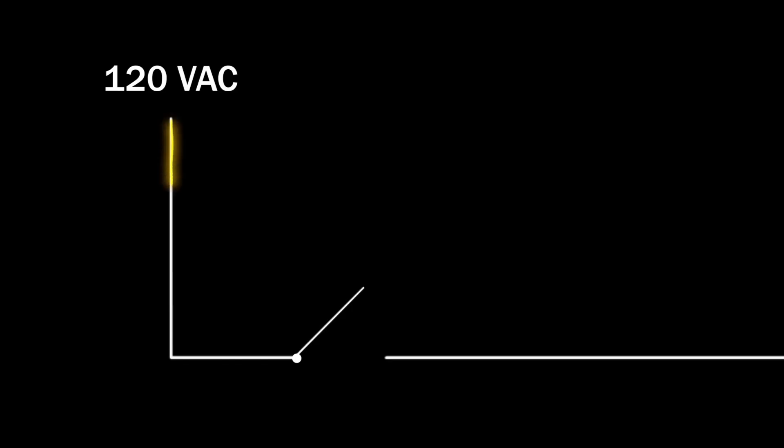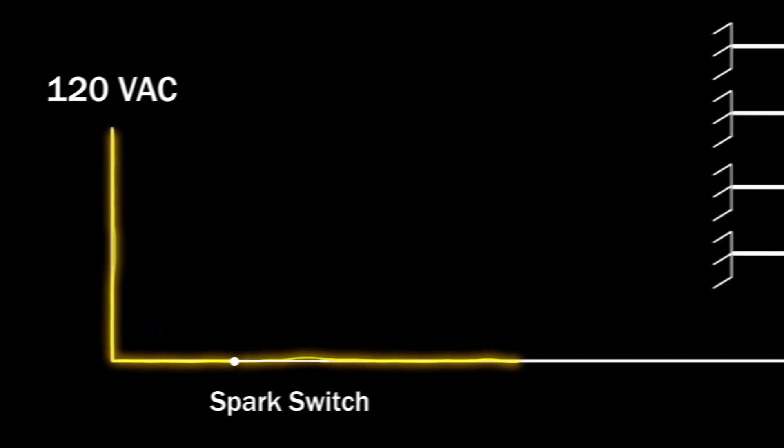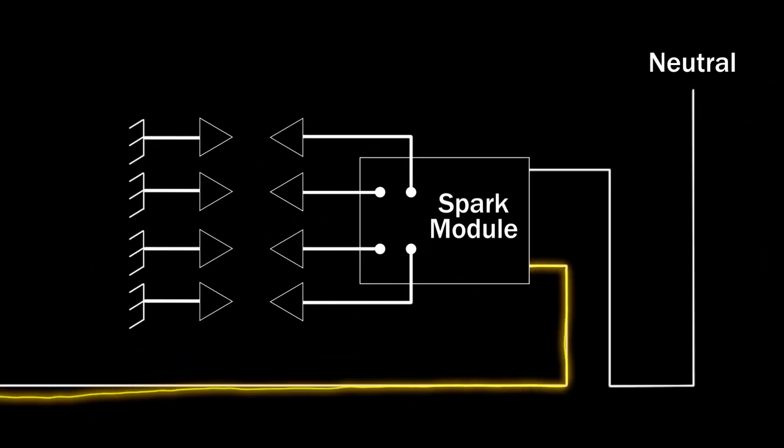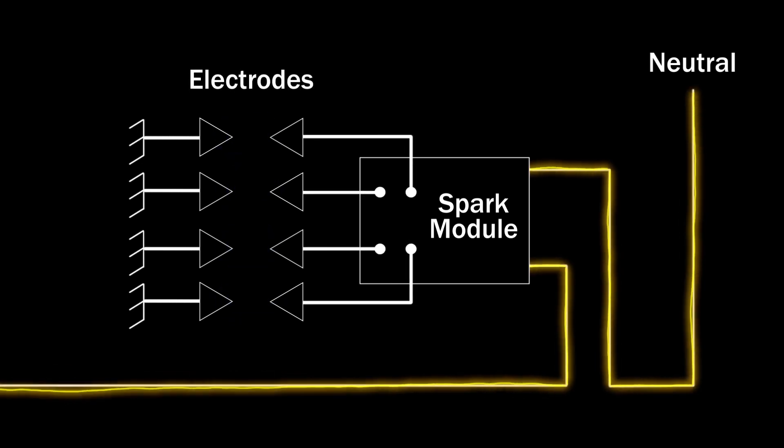At the same time, the spark switch closes, allowing 120 volts of alternating current to travel to the spark module, which produces high voltage pulses to all of the electrodes.